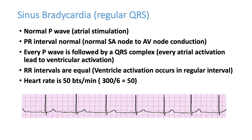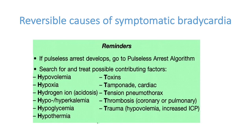Sinus bradycardia can be seen in many conditions: trained athletes, patients who are sleeping, patients with hypothyroidism, and patients taking beta-blockers or digoxin. When discussing causes of bradycardia, you can remember the pathological causes as 5 H's and 5 T's.